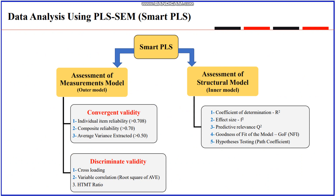Convergent validity is assessed at the individual item level and construct level, while discriminant validity is assessed between two constructs. When measuring discriminant validity we check three criteria: number one is cross-loading, number two is the Fornell-Larcker criterion in which we find the square root of the average variance extracted, and the third one is the HTMT ratio. The Heterotrait-Monotrait ratio should be less than 0.85 between constructs — the lower the ratio, the better the discriminant validity. Once all six criteria of the measurement model are fulfilled, we can proceed to the assessment of the structural model.